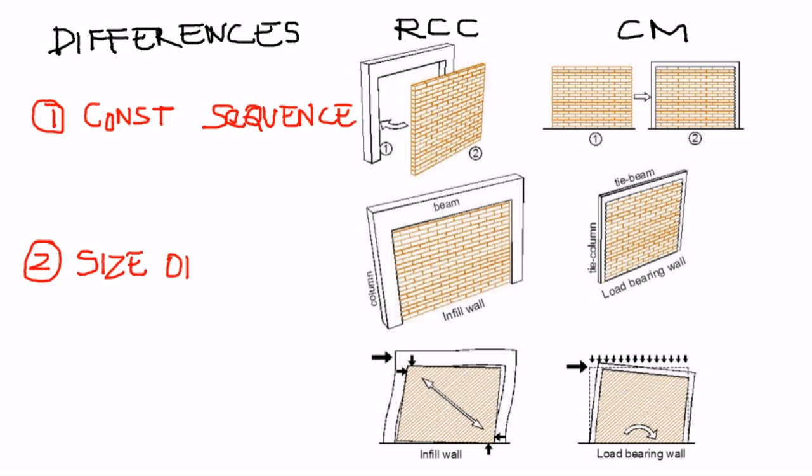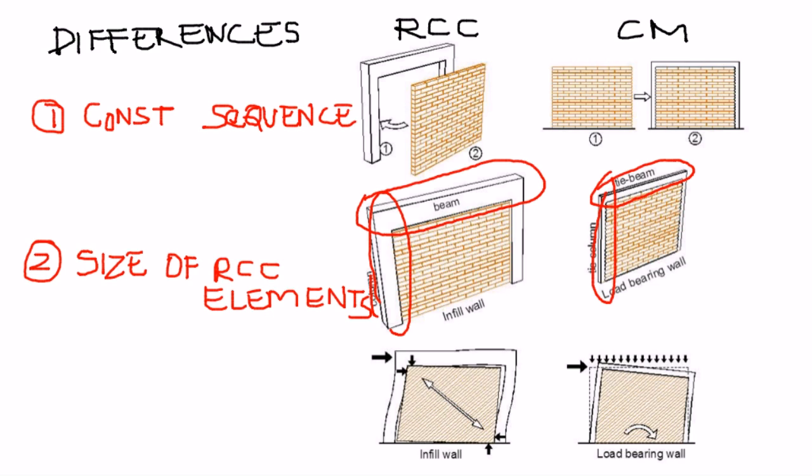The second is size of RCC confining elements or RCC elements. In case of RCC construction, elements are columns and beams, which are pretty robust or larger in size compared to confined masonry construction when we talk about tie columns and tie beams. The reason is that RCC frame construction carries both gravity and lateral loads. Whereas in confined masonry construction, walls and confining elements work together, and they carry both types of loads.